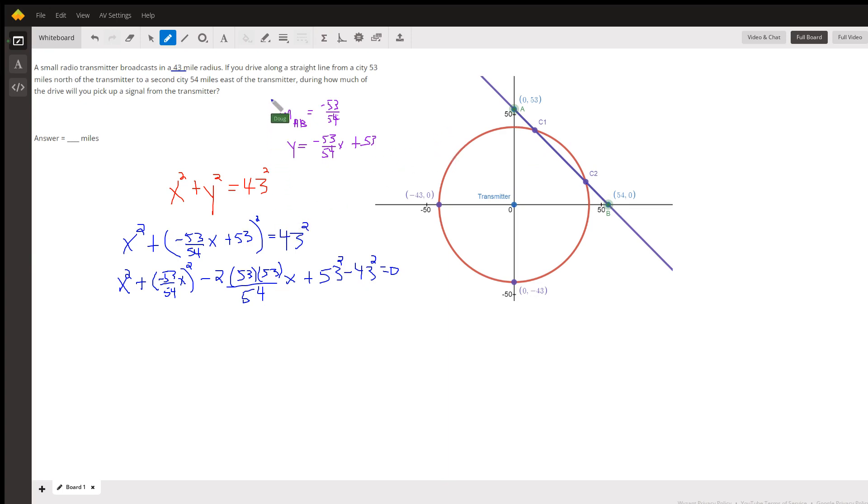But the equation of the line has a slope of negative 53 over 54. So here in slope intercept form is the equation of this purple line.